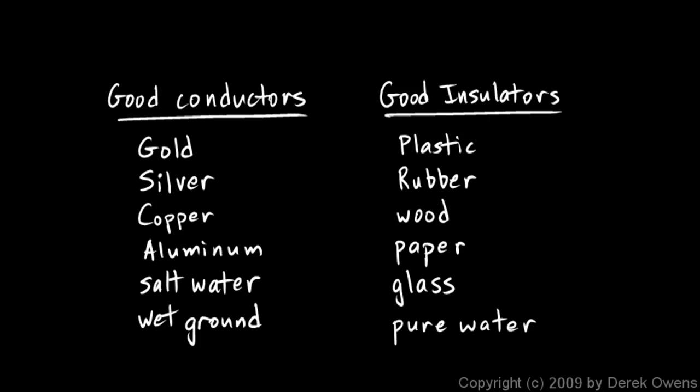There are some materials, however, that are right in between, and these are materials that we call semiconductors. A semiconductor is a material that isn't really a good conductor, but it's also not really a bad conductor. It's right in between being a conductor or an insulator. An example would be the element silicon.